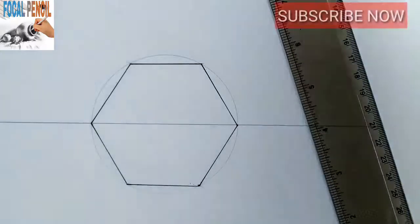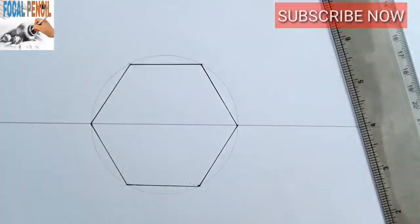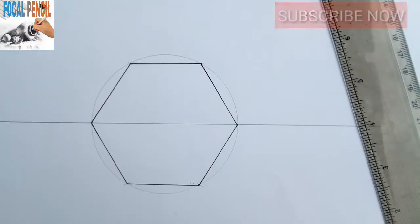Now if you can observe vividly, this is a hexagon, and it is a polygon with six sides.